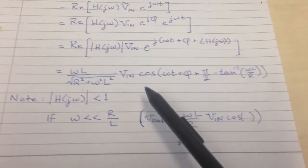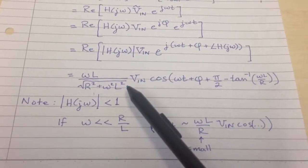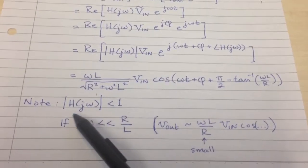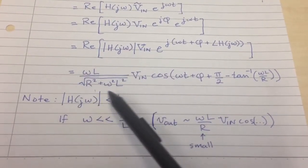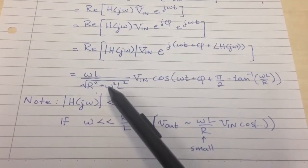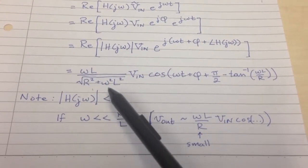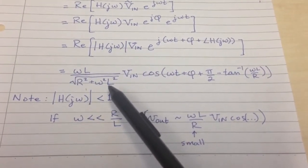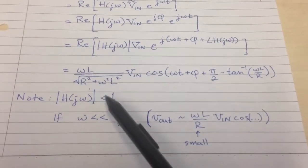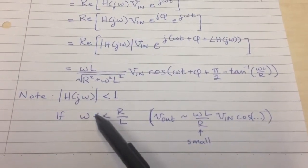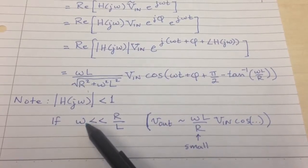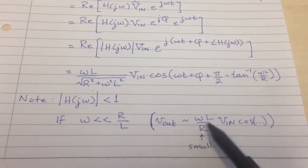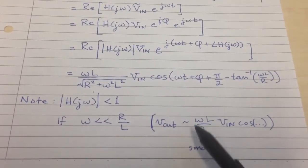And there's a couple quick things to notice about it that basically are what makes it a filter. The first is that this magnitude of H is always less than 1, because ωL is always going to be smaller than the square root of ω squared L squared plus another term. So this term will always be less than 1. And in particular, for low ω, it's going to be a lot less than 1.